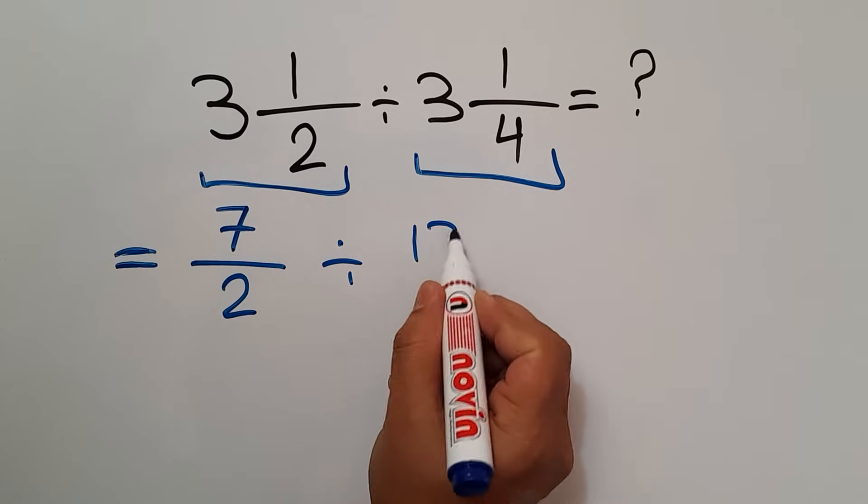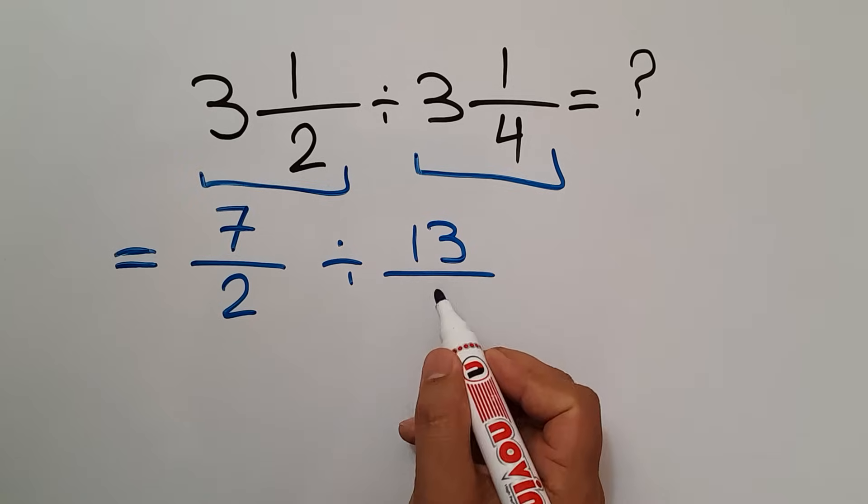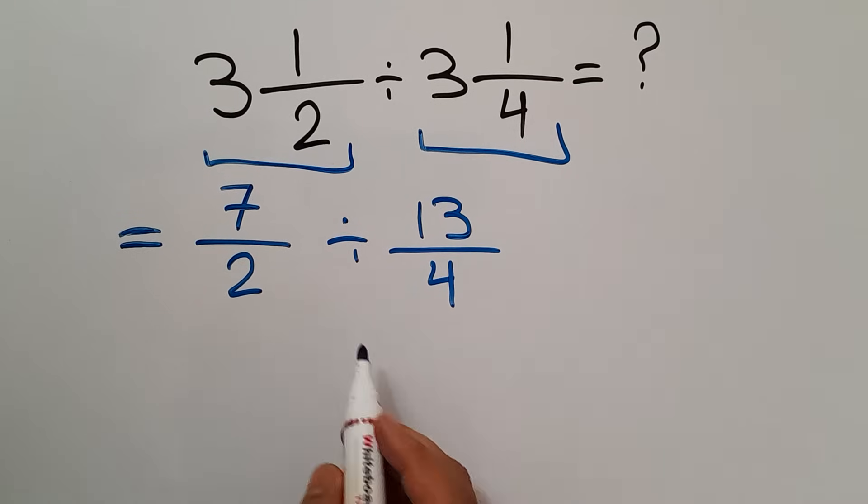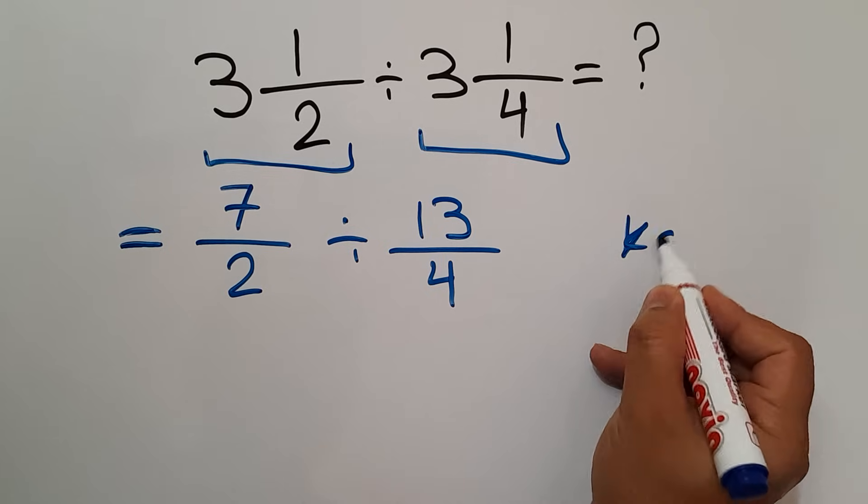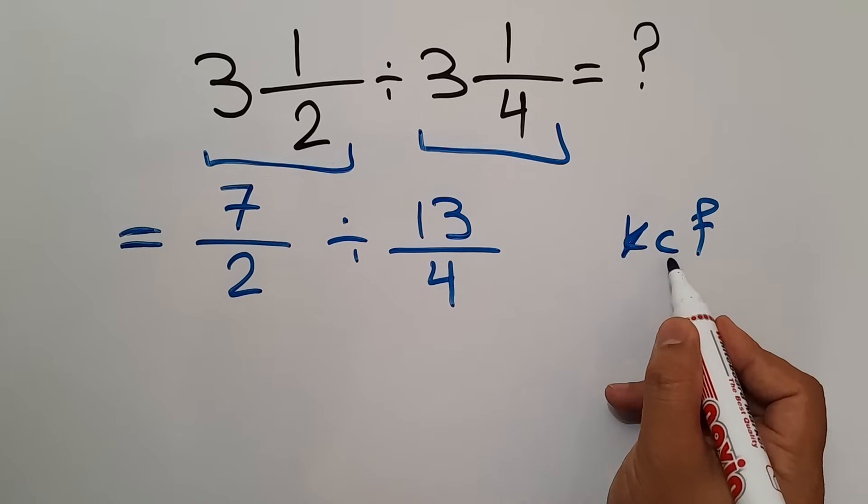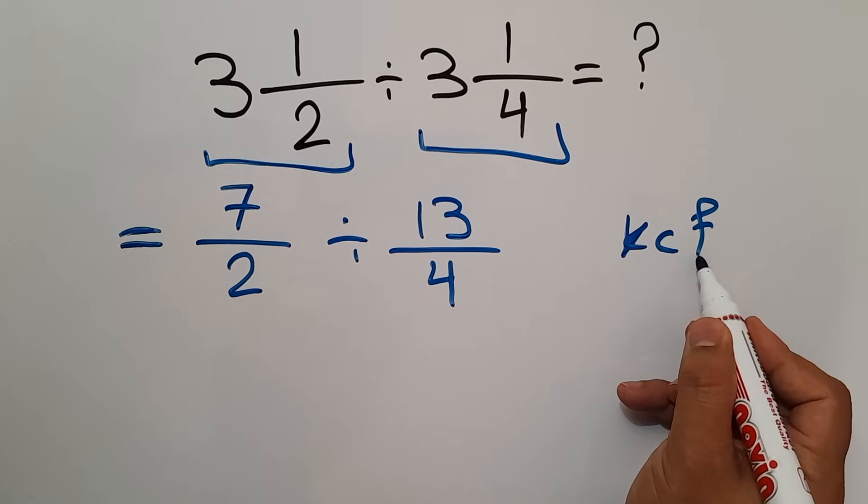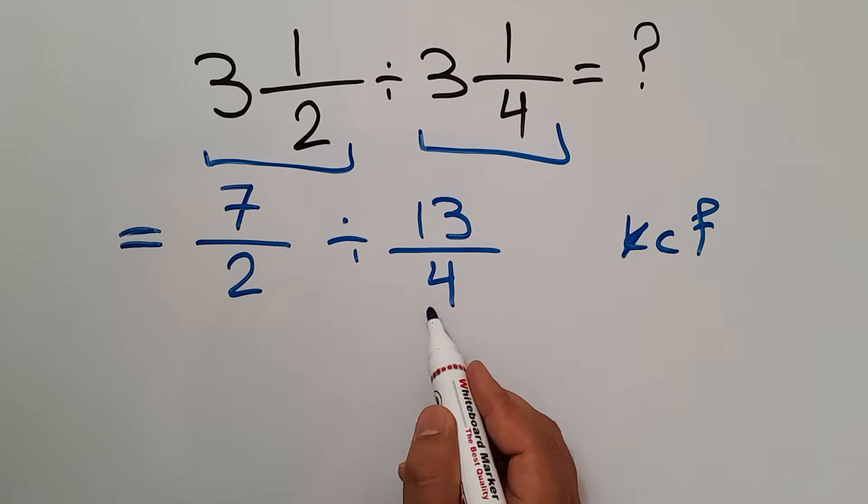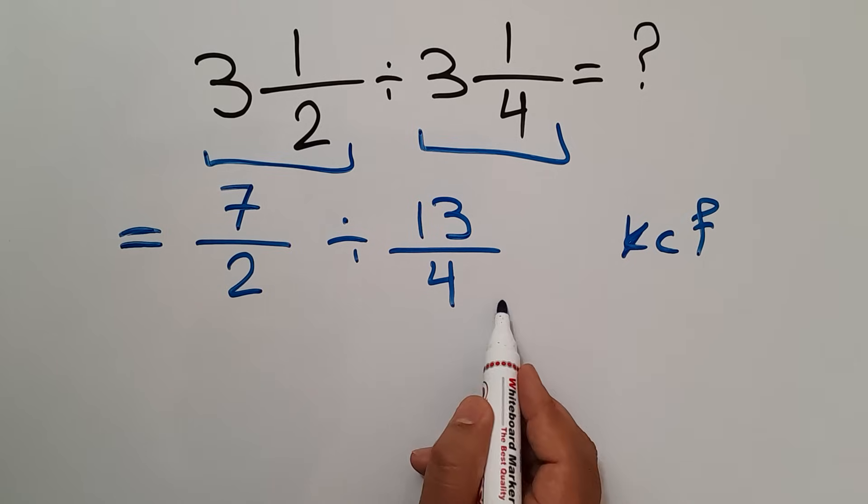Keep the first fraction, change the division to multiplication, and flip the second fraction. So we can write 7 over 2 times 4 over 13. Now 2 divided by 2 equals 1, and 4 divided by 2 equals 2.